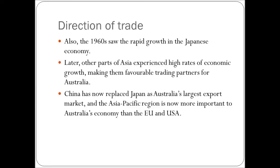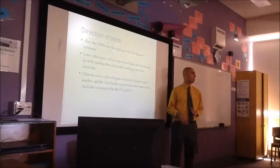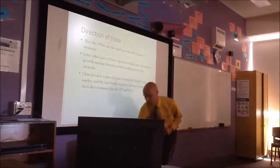The 1960s saw rapid growth in the Japanese economy, and later in other Asian economies called the Asian Tigers. Those Asian countries experienced high rates of economic growth, making them favourable trading partners for Australia. On one hand, push factors of less trade with Europe, and on the other, pull factors of more trade with Asia. China has now replaced Japan as Australia's largest export market — this was only a recent event. The Asia-Pacific region is now more important to Australia's economy than the EU, Europe, and the USA.